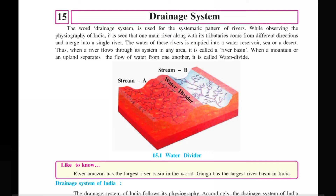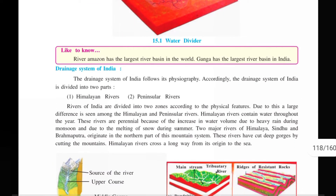The entire river flows through its system in any area — this is called the river basin. When the river flows from the left side of a mountain or upland, the water divider, as written in figure 15.1, is like a mountain that divides the river. The water flows differently in each direction, categorized as stream A or stream B — these are called different streams.